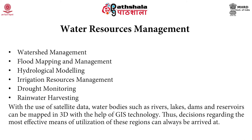Remote sensing and GIS also have varied uses in water resource management — including watershed management, flood mapping and management comprising pre- and post-flood mapping and monitoring, inundation of river banks, and conservation strategies. They are also used for hydrological modeling and management of irrigation resources. Drought monitoring and rainwater harvesting are also important applications. With satellite data, water bodies such as rivers, lakes, reservoirs, and dams can be mapped in three-dimensional domain with GIS technology. Decisions regarding the most effective means of utilization of any region can be arrived at by incorporating both remote sensing and GIS.